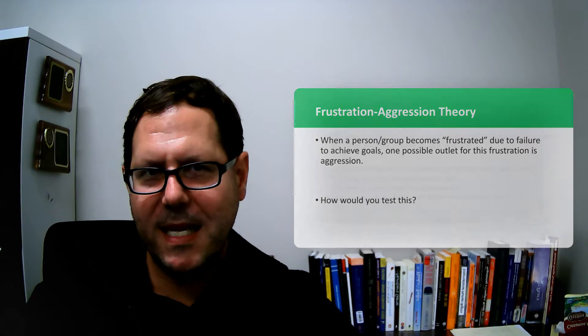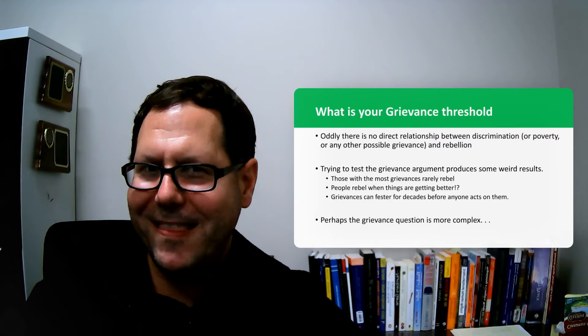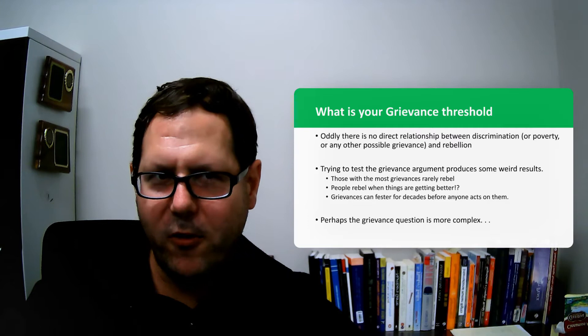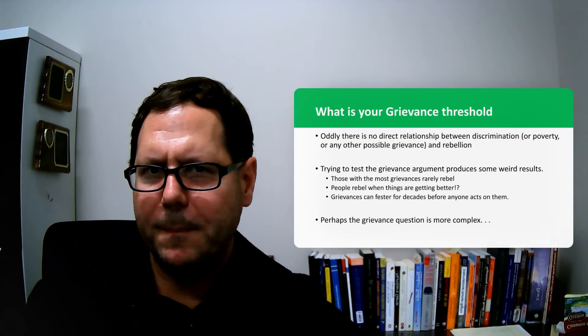Weirdly, when we try to find that correlation, it doesn't really appear to be there. It's very hard to draw a straight line and say where there are clear grievances, that's where we see rebellion. We certainly can find cases where that's the case.